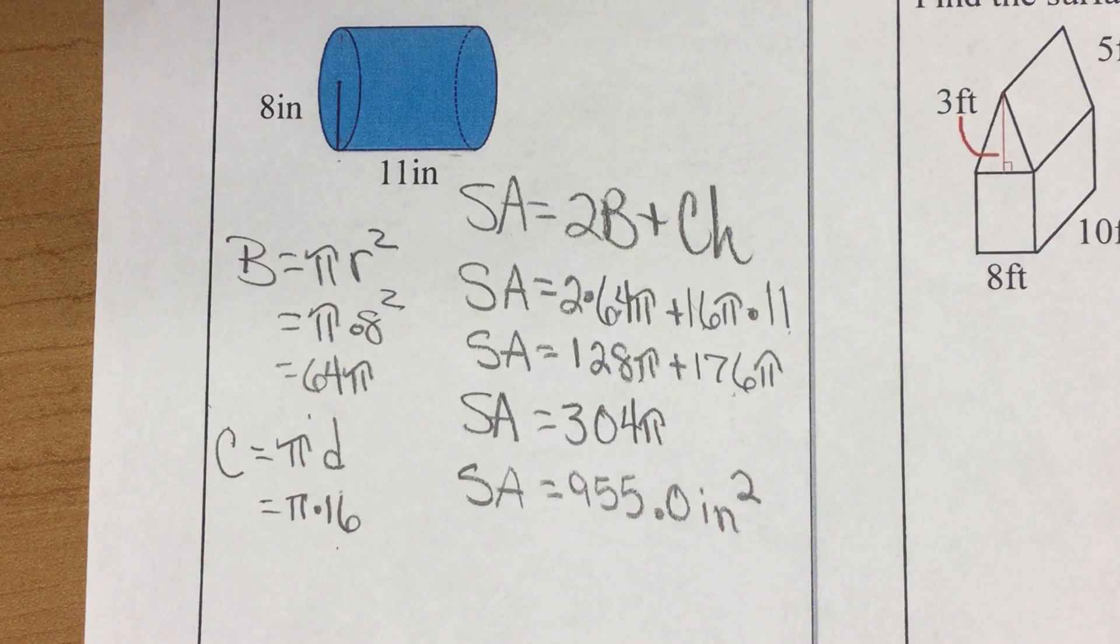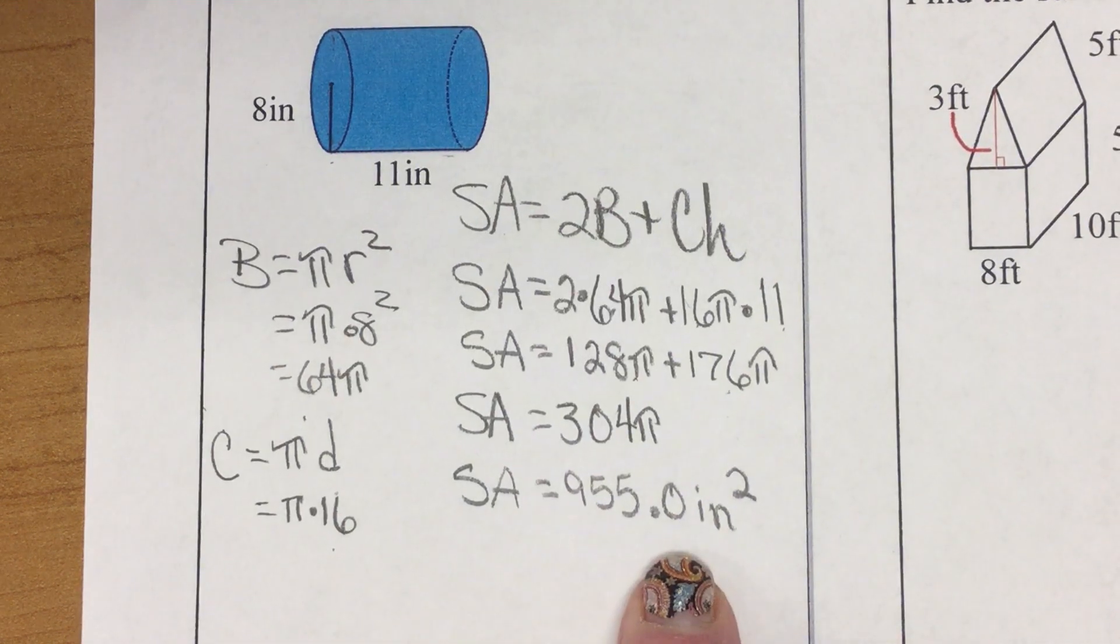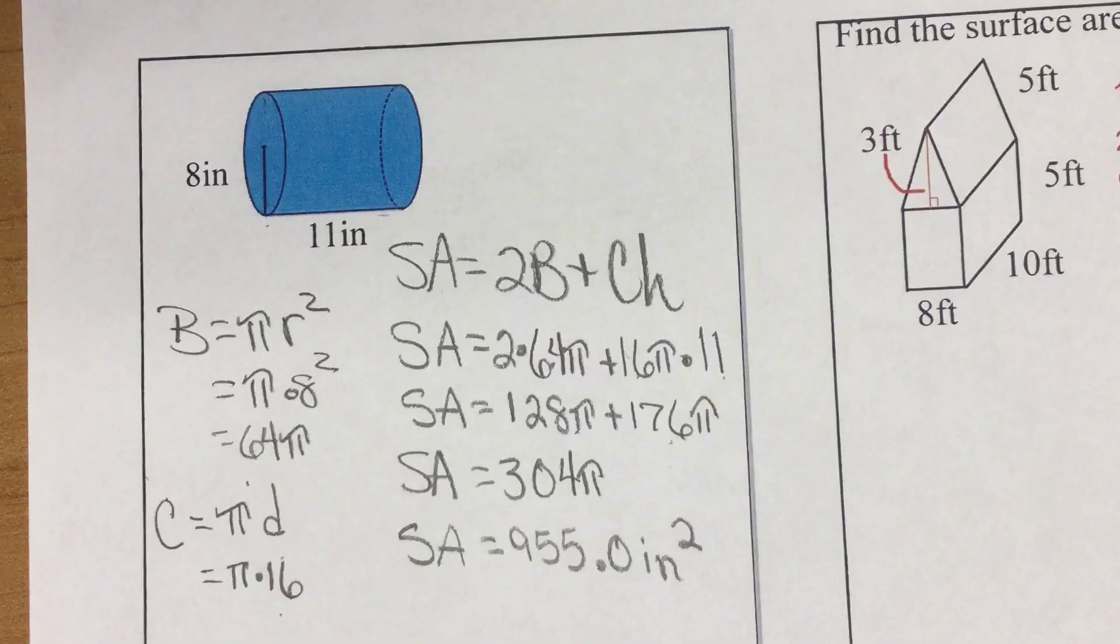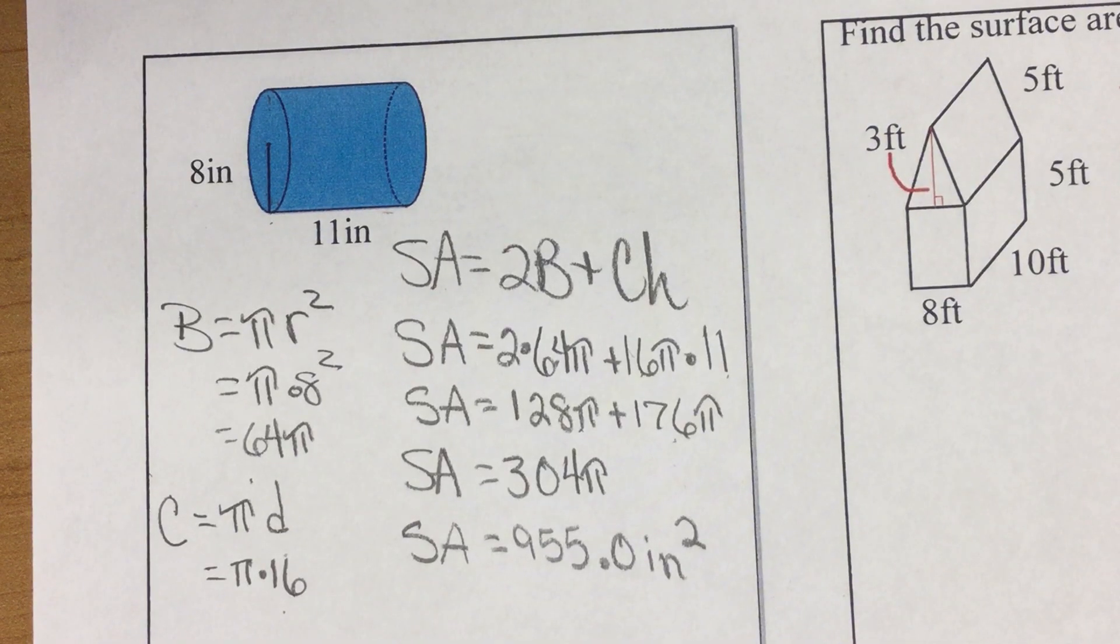Inches squared. Now, your directions on your work will either say nearest tenth, nearest hundredth, nearest whole number. So, to the nearest tenth, that would be that answer.